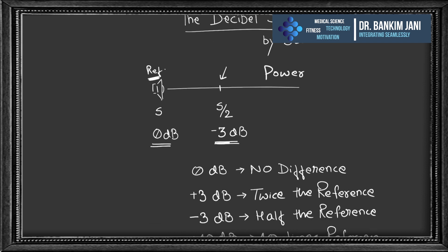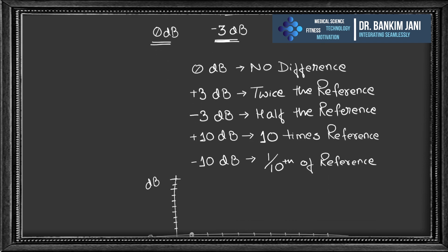Plus 10 dB means 10 times the reference power; minus 10 dB means one-tenth. When we draw a graph, with 0 dB at a reference power of 1, doubling the power gives plus 3 dB, and 10 times the power gives plus 10 dB. On the decreasing side, half power is minus 3 dB and one-tenth power is minus 10 dB.